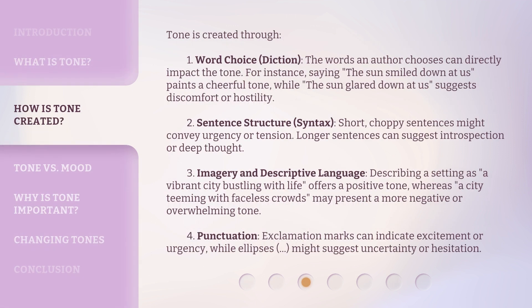Tone is created through several elements. First: word choice, or diction. The words an author chooses can directly impact the tone. For instance, saying "The sun smiled down at us" paints a cheerful tone, while "the sun glared down at us" suggests discomfort or hostility.